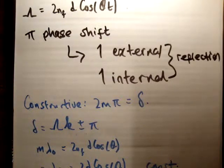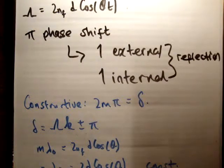And therefore, we need to increase this by half a wavelength. So m plus a half times lambda f is equal to 2d cos theta. And that gives you destructive interference.